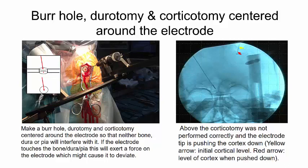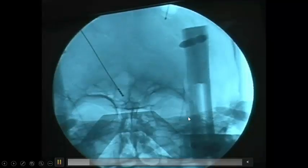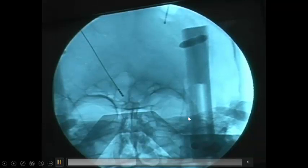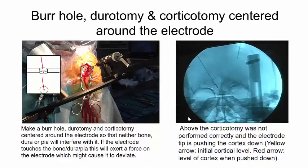We make a burr hole, durotomy and corticotomy centered around the electrode so that neither bone, dura or pia will interfere with it. If the electrode touches the bone, dura or pia will exert a force on the electrode which might cause it to deviate. We see here to the right an example where the corticotomy was not performed correctly and the electrode tip is pushing the cortex down. We can also see a video. Here we see the electrode trying to force its way through the cortex. And of course this might cause the electrode to deviate.